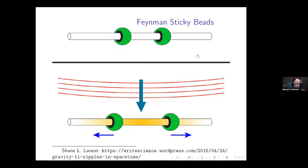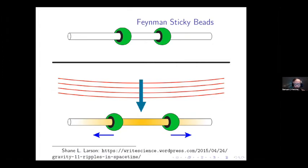The idea with the sticky bead argument is the following. You've got a fairly rigid bar that exerts friction on two beads that can slide along it. The gravitational wave passes through, and through this oscillatory behavior the beads have a natural tendency to slide back and forth. As they slide back and forth, they generate friction in the bar, and the bar increases in temperature. The underlying idea is that changes in energy can only be produced by real things — transference of energy is considered a sufficient criterion for the reality of something.